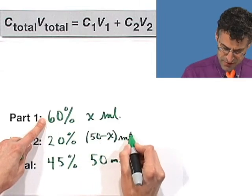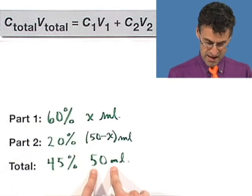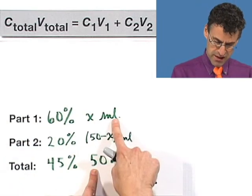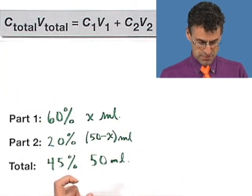Because the sum of these things has to yield 50. The volume of this plus the volume of that has to give me 50. So if I have x for this, that means I have to have 50 minus x for the second one. So when I add them, I get that. And now I put them into the model.